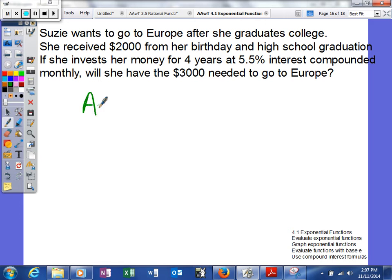Alright, so we don't know what our A is, but we do know what our principal is. If she's going to invest $2,000, that one is a one. Her interest rate has to be written as a decimal. The way you can write your interest rate as a decimal is to take your interest rate and divide it by 100, or move the decimal two places to the left.